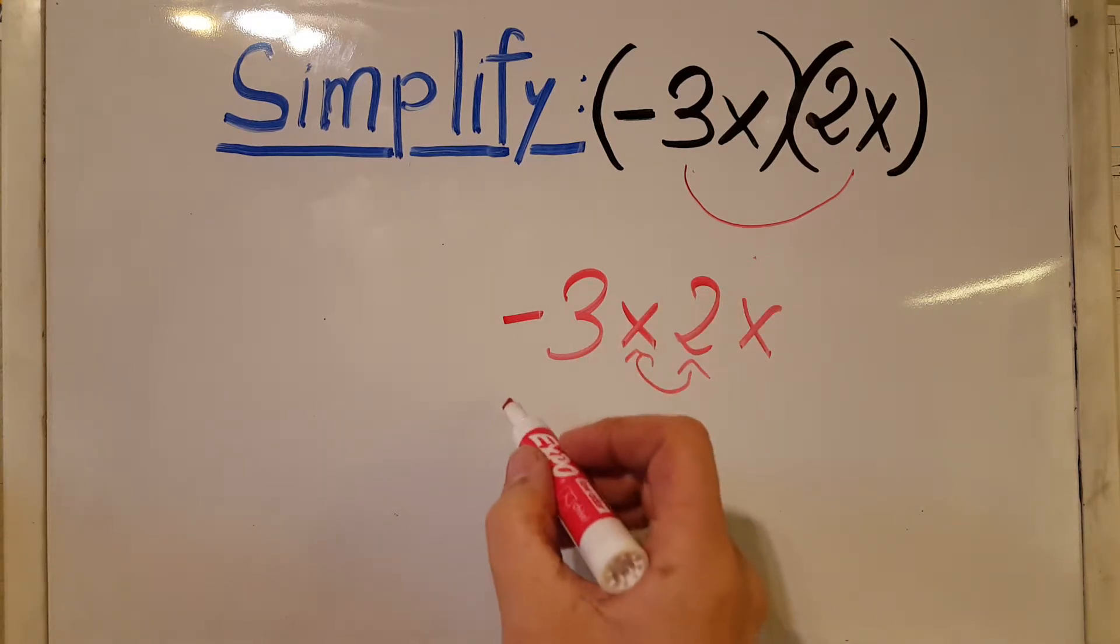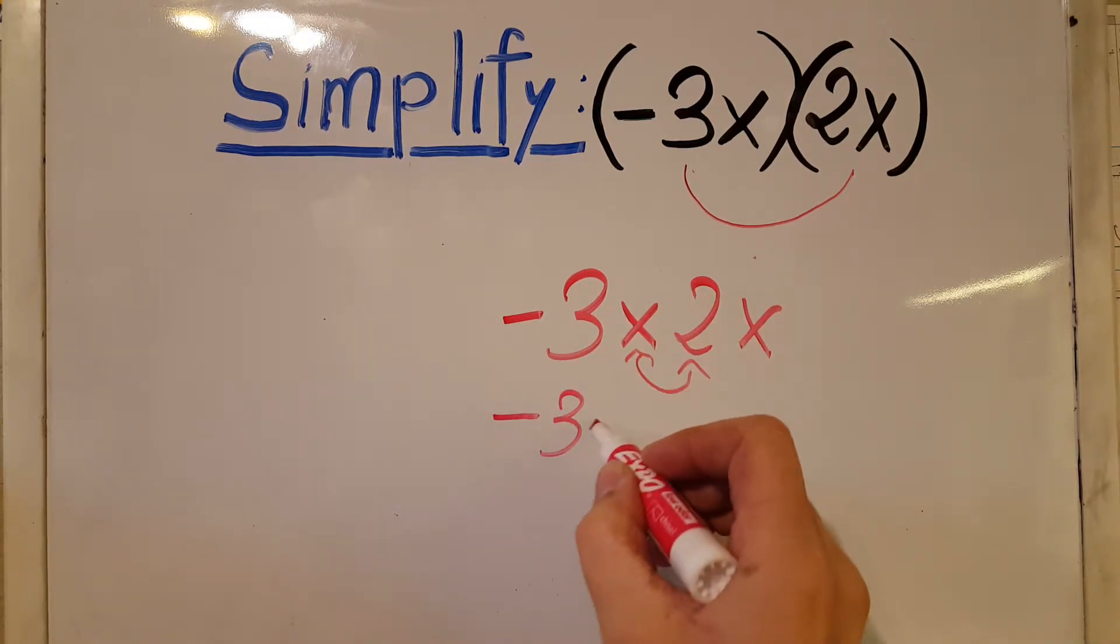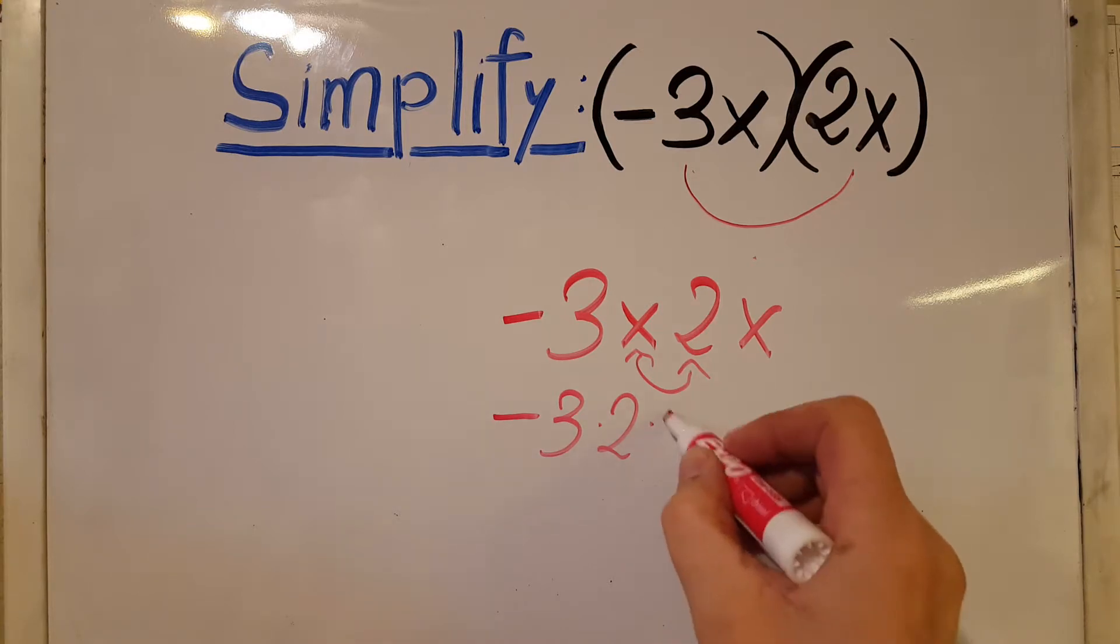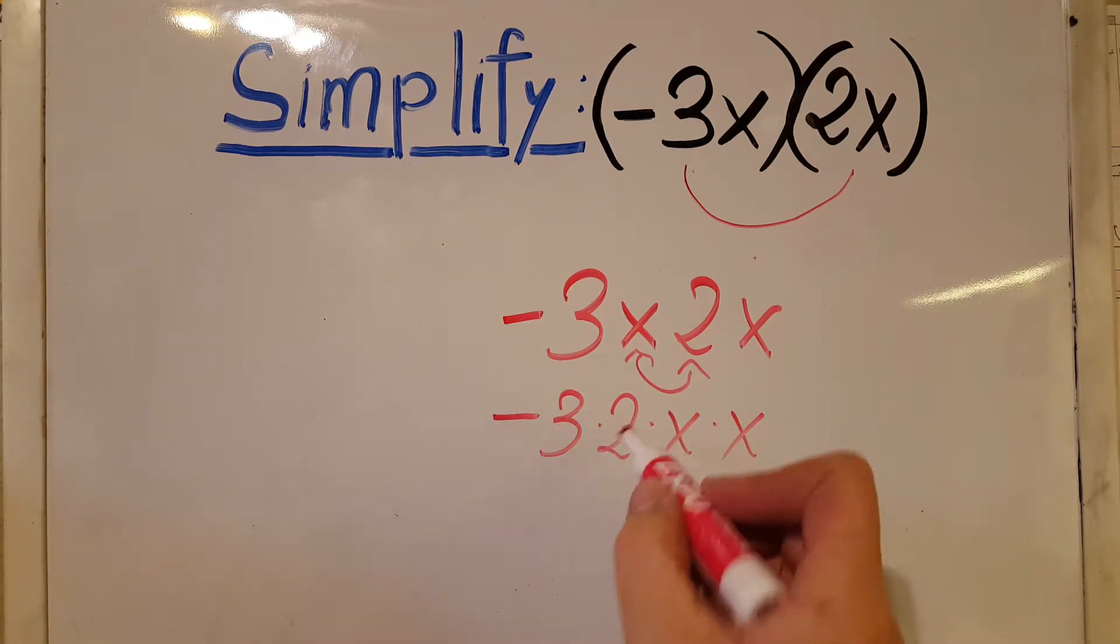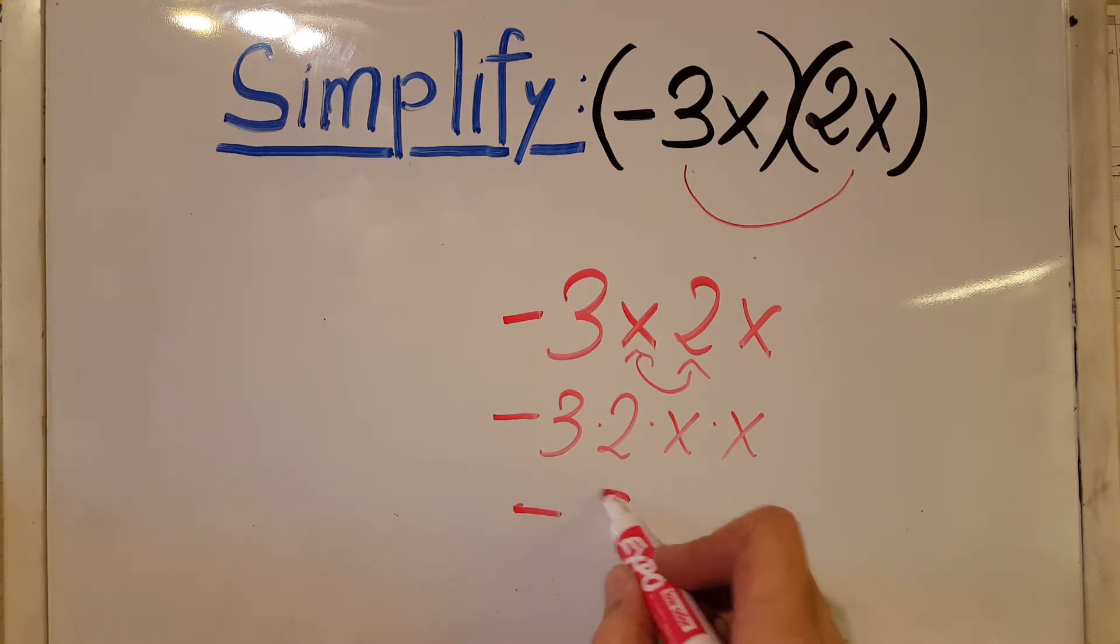So negative 3 times 2 times x times x. Now we can see that these two we can combine. They are like terms. So negative 3 times 2 is gonna give us negative 6 times...